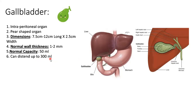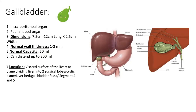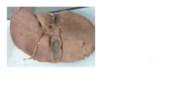The gallbladder can perforate and become an emergency. It is located on the visceral surface of the liver in the gallbladder fossa, also called the liver bed or cystic plane — this divides the liver into right and left surgical lobes. This corresponds to segments four and five of the liver. Looking at the cadaveric picture, the gallbladder sits in the gallbladder fossa between these segments.